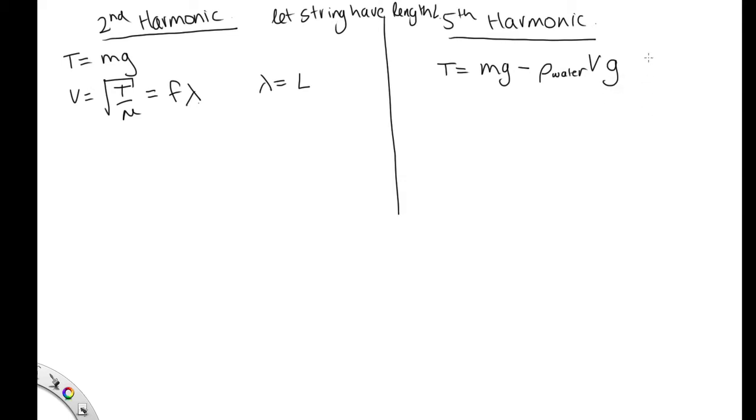In this case, we have lambda is equal to 2 fifths L, because each of those loops was 1 fifth of L, and two of them are needed to make up our wavelength.